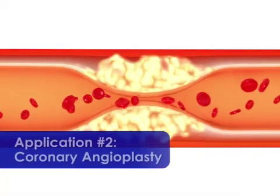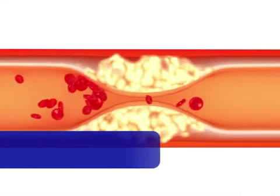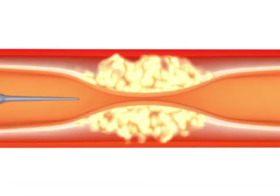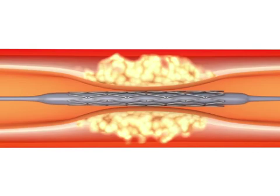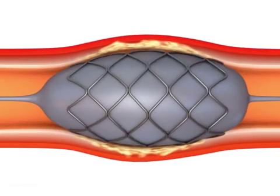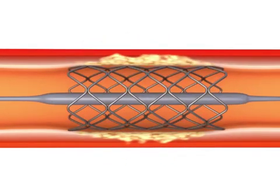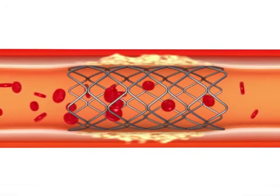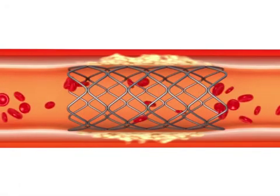Plaque buildup in arteries reduces the effective diameter for blood to flow. As a result, the heart has to work harder to compensate for the additional pressure loss. In extreme cases, the buildup increases the risk of a total blockage of the artery or heart failure. During an angioplasty procedure, a stent is inserted to re-expand the artery and restore normal blood flow.